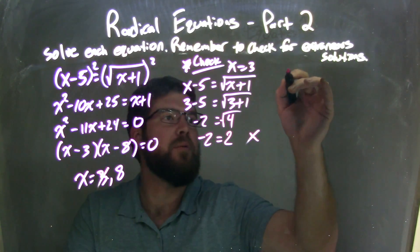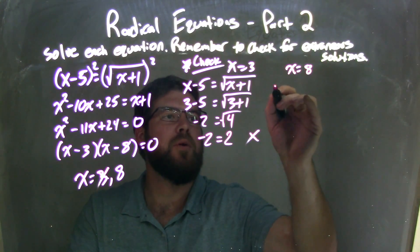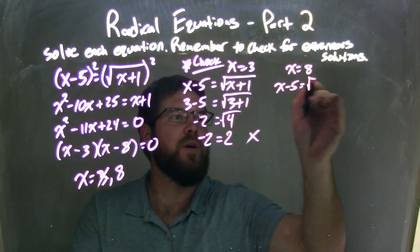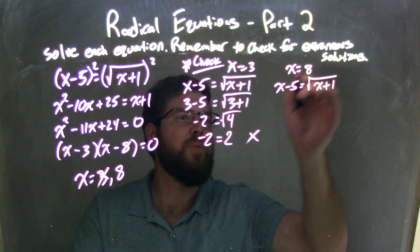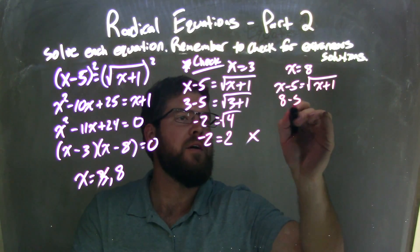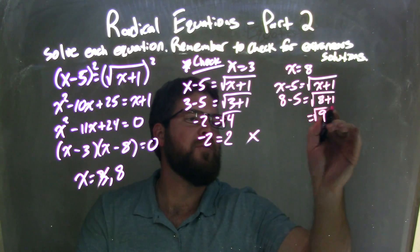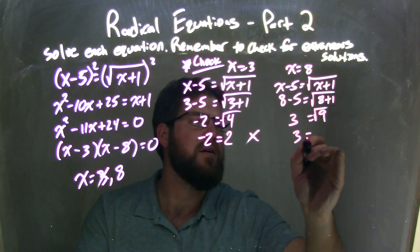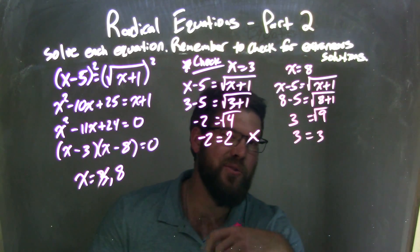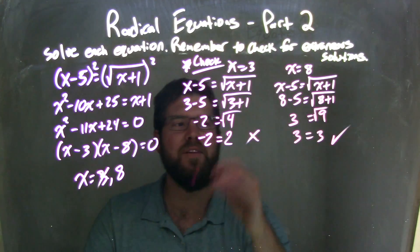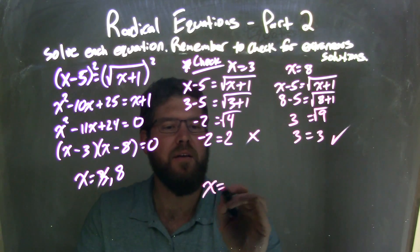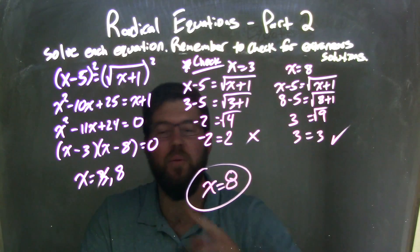Let's check the other one, x equals 8. So we're given x minus 5 equals square root of x plus 1. Let's plug 8 in for both x's. 8 minus 5 equals square root of 8 plus 1. 8 plus 1 is 9, so square root of 9 there. 8 minus 5 is 3. Square root of 9 is 3. Do the left and right hand sides equal? Yes, they do. Fantastic. Making x equals 8 our only solution. The other one was extraneous.